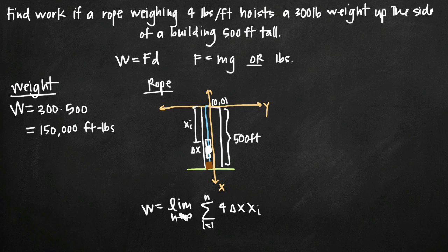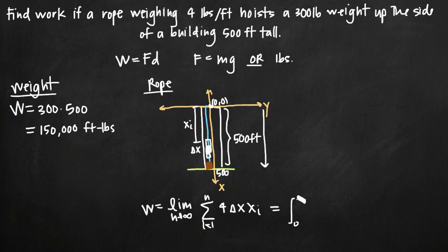When we take the limit of that sum as n goes to infinity, it becomes the integral from 0 to 500 — starting at the top (0) and going down to the bottom of the 500-foot building. The integrand is 4 times x sub i times delta x, which becomes 4x dx, so we have the integral from 0 to 500 of 4x dx.